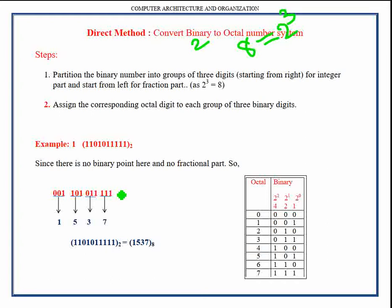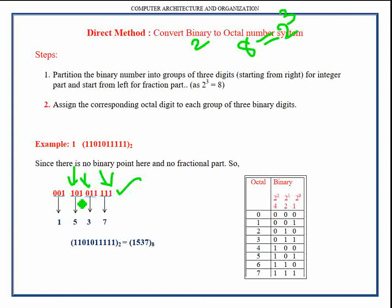Following this rule, we get three complete groups of three digits. In the last group only one digit is present, so in order to make it a complete group of three digits we have to add two more zeros. After adding those zeros, we now have four complete groups of three digits and can assign the octal equivalent value for each group.